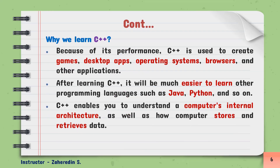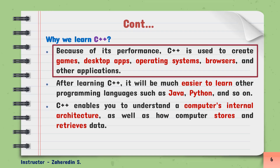Now let us go to why we learn C++. Previously, you know about the history of C++ and what a C++ program is. Now let us see why we learn C++. Because of its performance, C++ is used to create games, desktop applications, operating systems, browsers, and other applications. So by using this programming language, you can develop games, desktop applications, operating systems, browsers, and other types of applications. That is the reason why we learn C++.